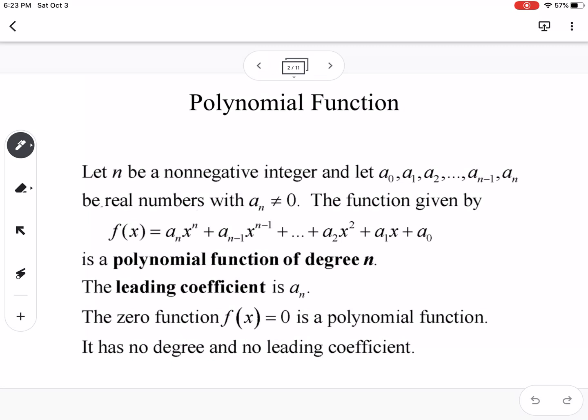So the first thing that we're talking about is polynomial functions. So this right here is kind of a complicated way of explaining a polynomial function. It has degree n, so the highest power, the highest degree of x is the degree of your function. And then the leading coefficient is the a sub n that is connected to your highest degree. So the zero function is a polynomial function. It has no degree and no leading coefficient.